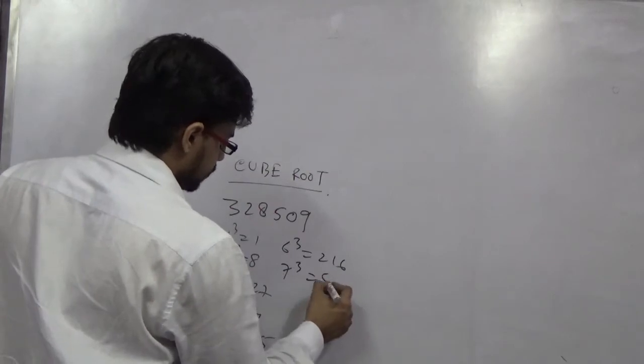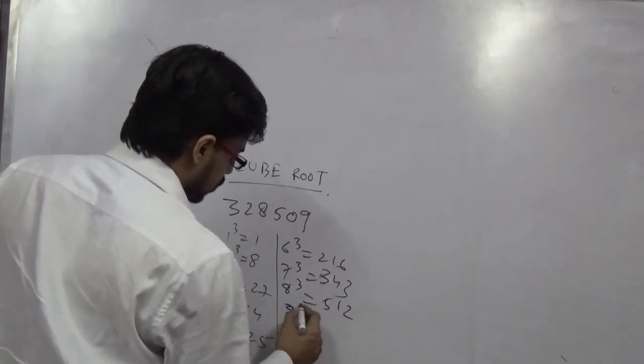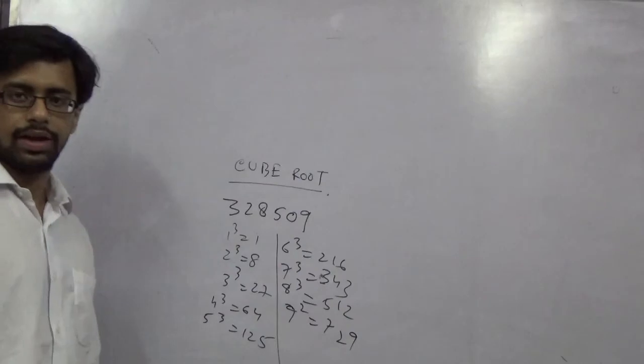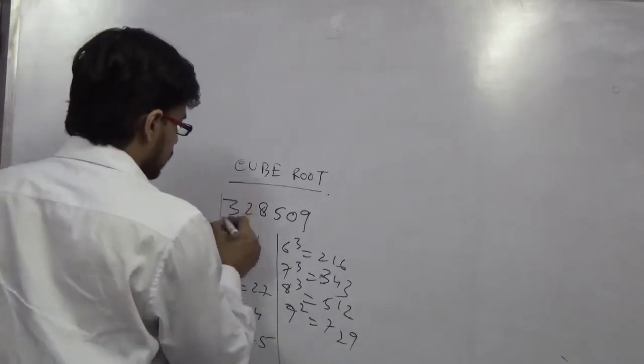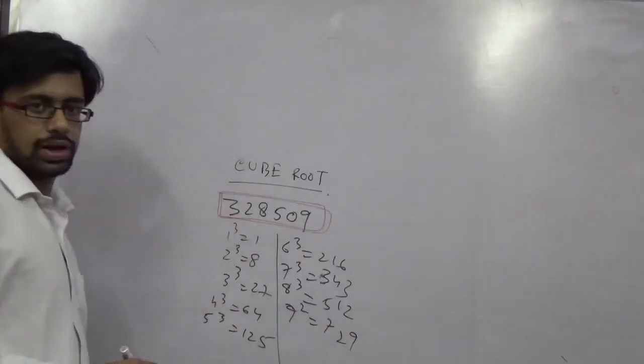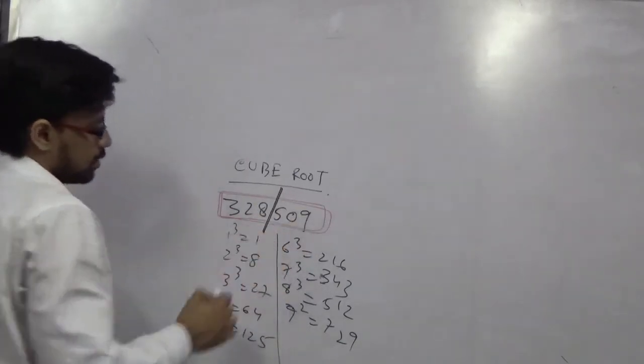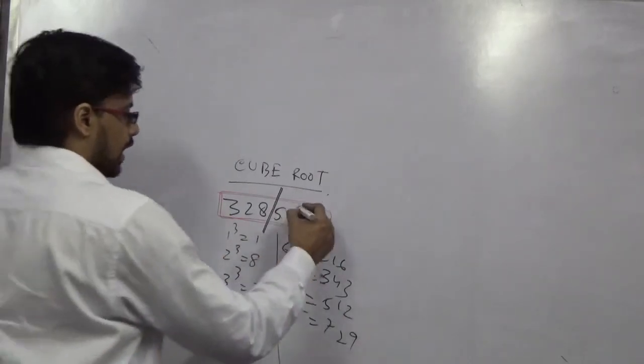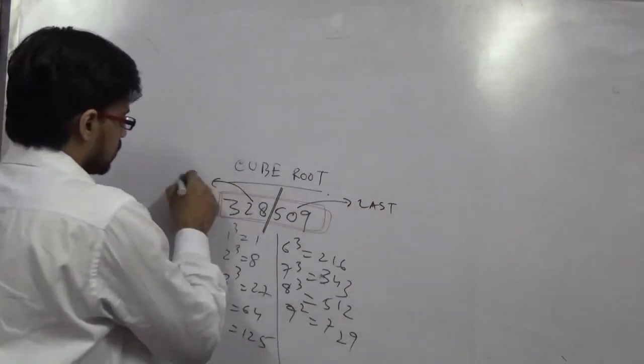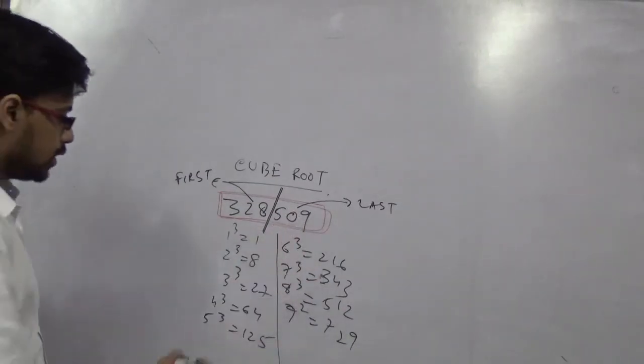Now you have a number which is 328509. How to do it? For this number, you split the number into two parts: 328 and 509. The 509 part tells you about the last digit, and 328 tells you about the first digit. For 509, what is the last digit? 9.